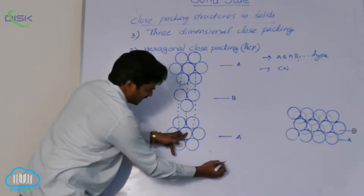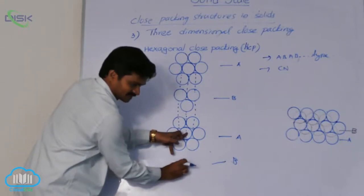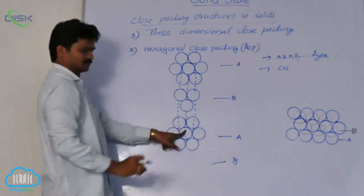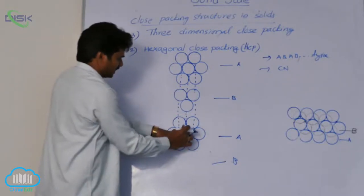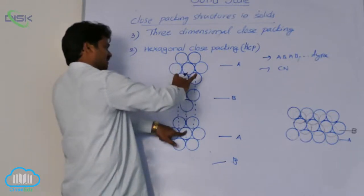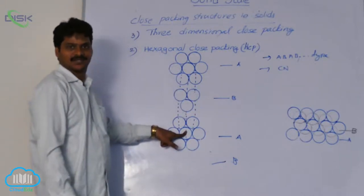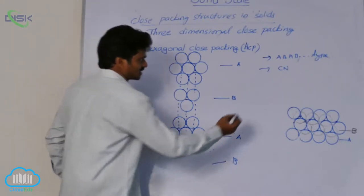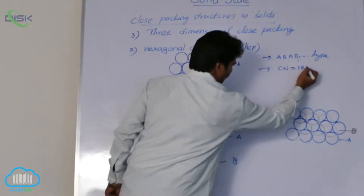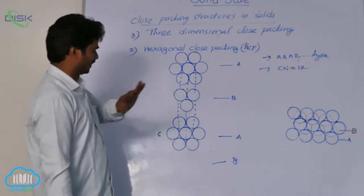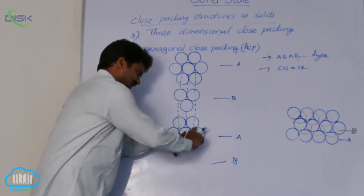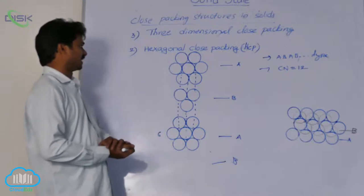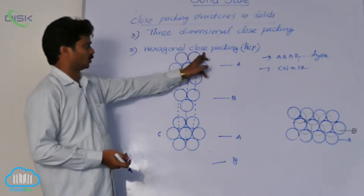Below this layer, there will again be layer B, and those 3 spheres of layer B from below are also in contact with this sphere. So in total, this sphere is in touch with 6 spheres from its own layer, 3 spheres from its above layer, and 3 spheres from its below layer — giving a total of 12 spheres. Therefore, the coordination number in HCP geometry is 12.